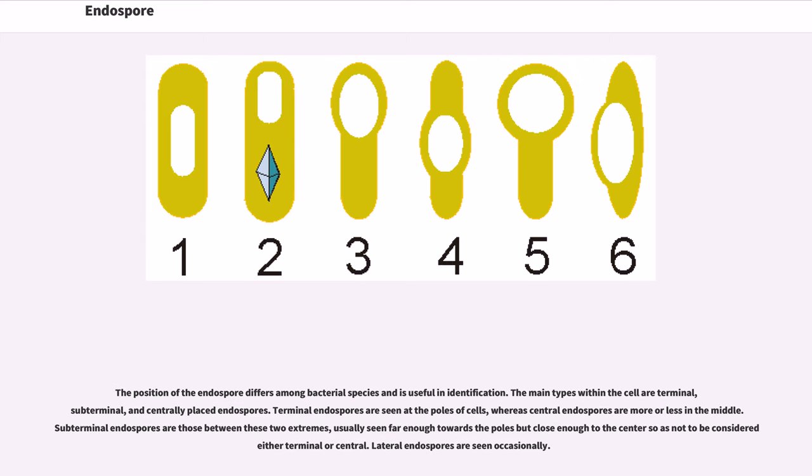The position of the endospore differs among bacterial species and is useful in identification. The main types within the cell are terminal, subterminal, and centrally placed endospores. Terminal endospores are seen at the poles of cells, whereas central endospores are more or less in the middle. Subterminal endospores are those between these two extremes, usually seen far enough towards the poles but close enough to the center so as not to be considered either terminal or central. Lateral endospores are seen occasionally.